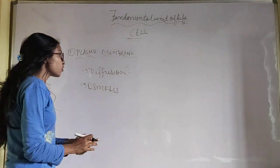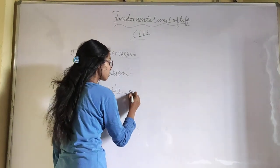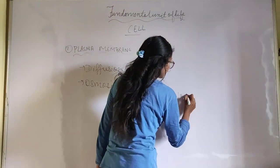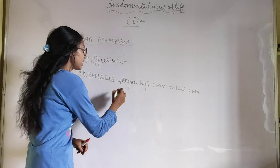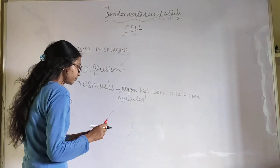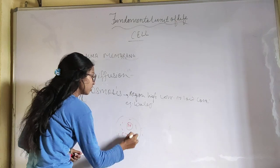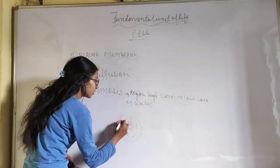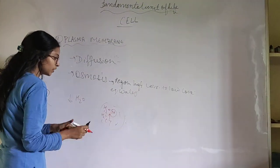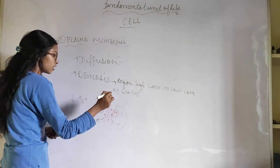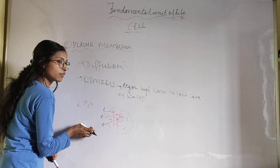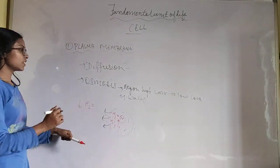Osmosis is also the movement of molecules from a region of higher concentration to lower concentration, but it occurs in liquids. For example, if the concentration of water is high inside the cell and low outside, water will come out of the cell. If it is high outside and low inside, water will enter. This is osmosis.